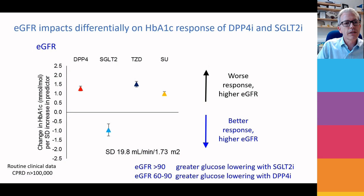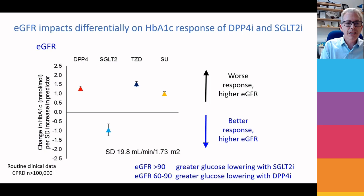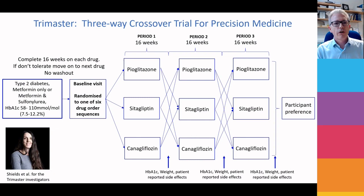We see something similar for eGFR. If you have a higher eGFR, you respond better to SGLT2 inhibitors than to DPP4 inhibitors, TZDs, and SUs. If your eGFR is greater than 90, you respond better to SGLT2 inhibitors. If your eGFR is 60 to 90 — still what we would consider to be reasonable renal function, not chronic kidney disease — then you respond better to DPP4 inhibitors. That was from observational data, and people would always argue that you can't just take forward observational data — you need to do a trial.